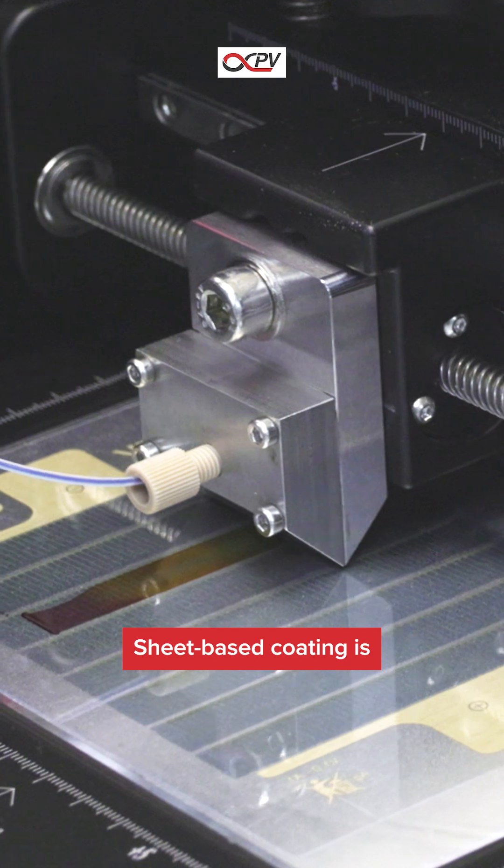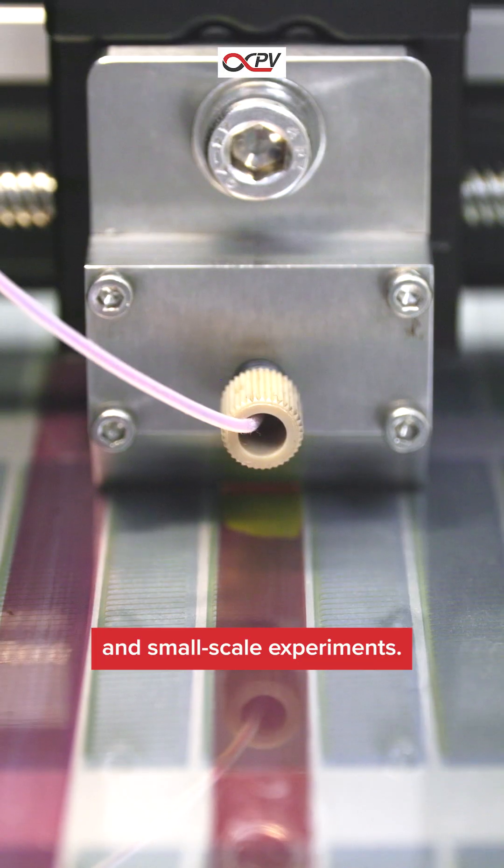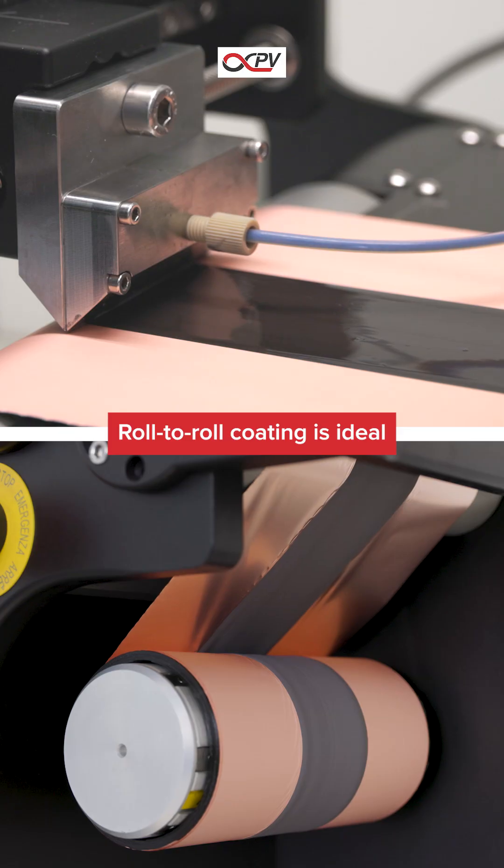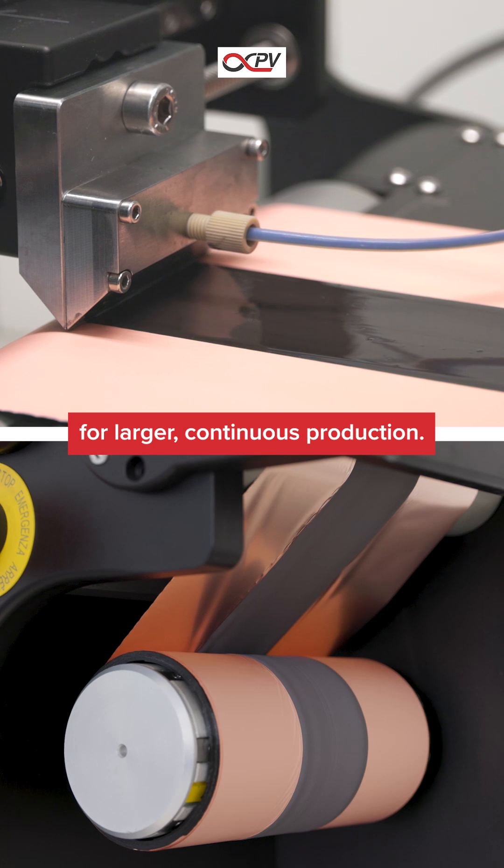There are two main ways to coat. Sheet-based coating is great for testing and small-scale experiments. Roll-to-roll coating is ideal for larger, continuous production.